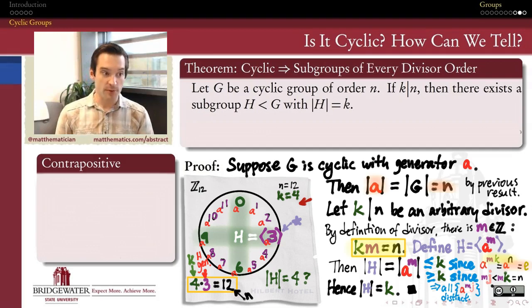This is super duper powerful. It tells me not only do I have elements in a cyclic group whose order are divisors of the order of the group, but I also have subgroups inside of my cyclic group whose orders are divisors of the order of the full group.